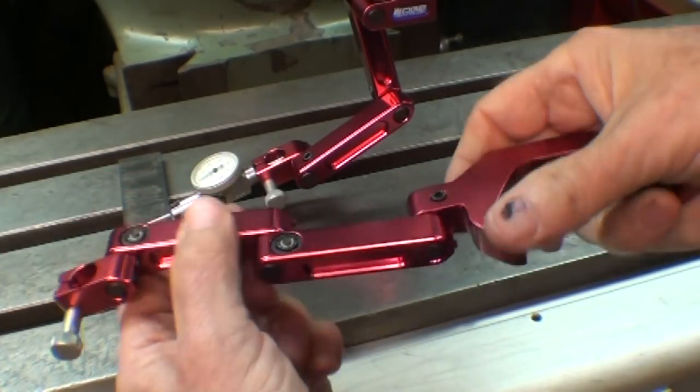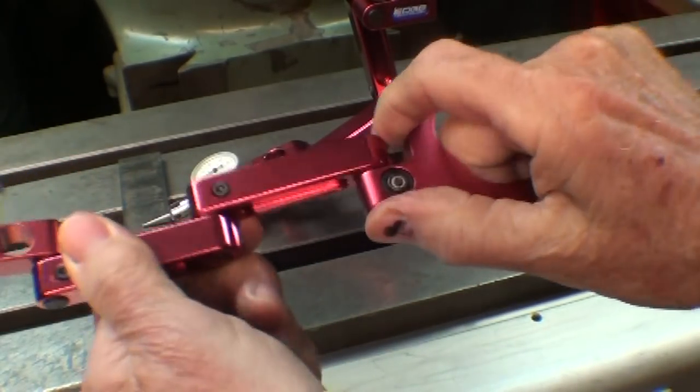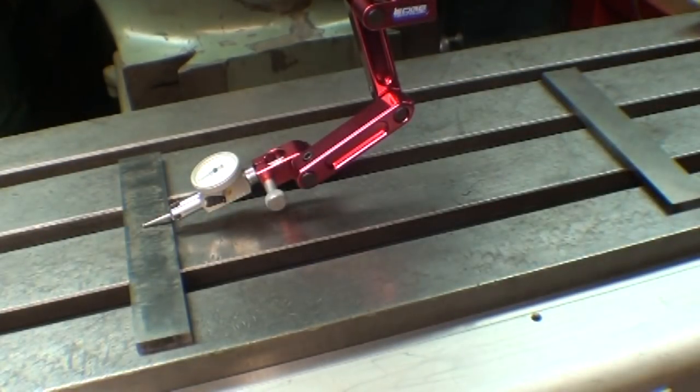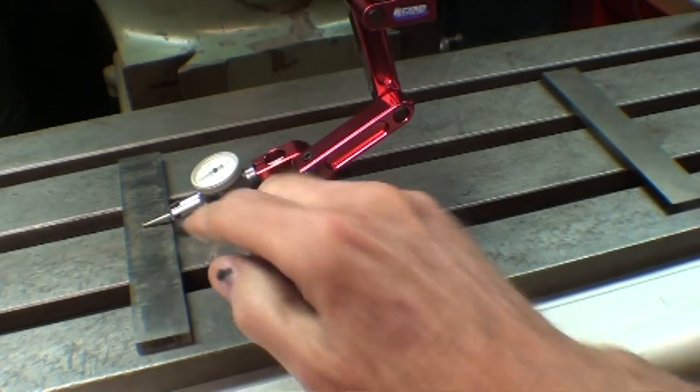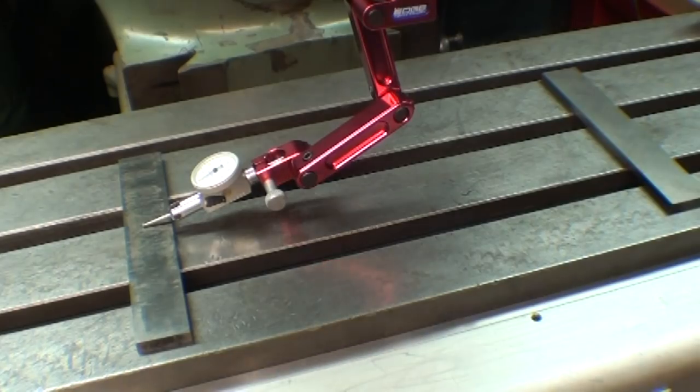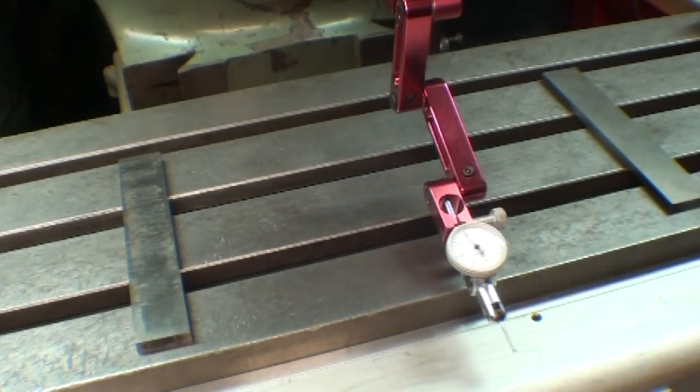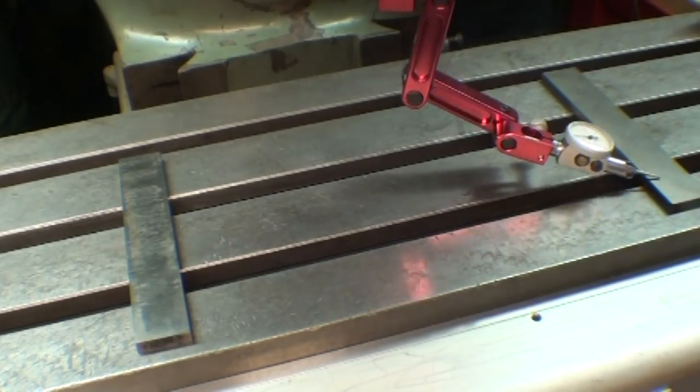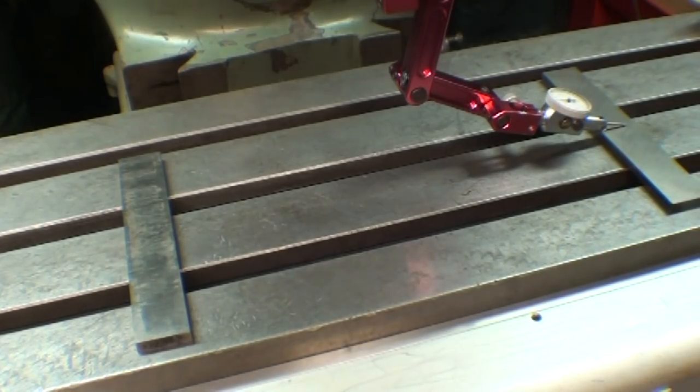I really like the joints on this product because they are easy to move, but yet they stay where you put them. Some people use a pair of parallels that have no holes in them, matched parallels, to do this. Again, your table must be clean or you get a false reading. You can bring it around like that. That way you don't have to worry about the T-slots. Again, that's just an idea I'm throwing out.